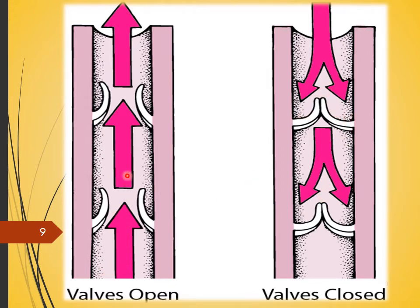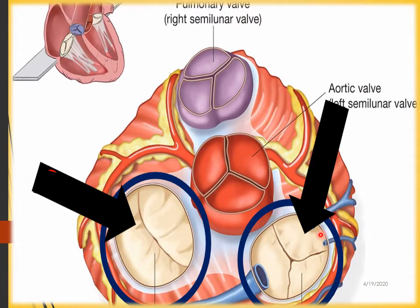Veins have no pumping device behind them, so as they collect blood from anywhere in the body, these semilunar valves inside the veins prevent blood from going backward and ensure it moves forward — towards the heart. There are also semilunar valves found mostly in the aortic region, and these are also called semilunar valves.